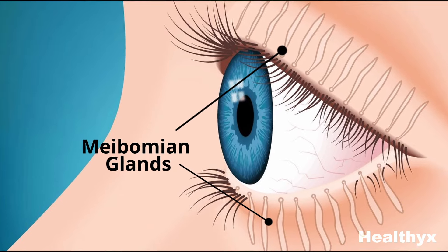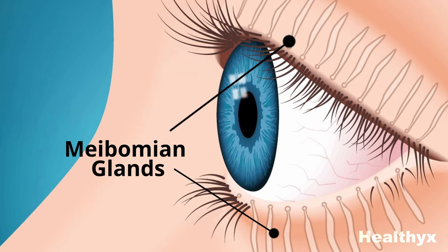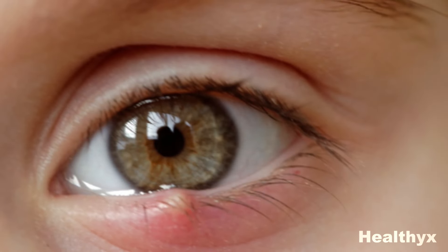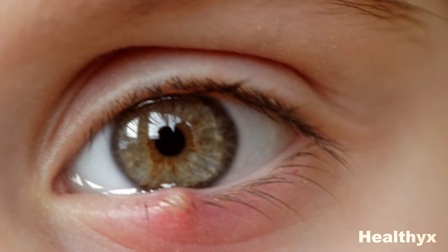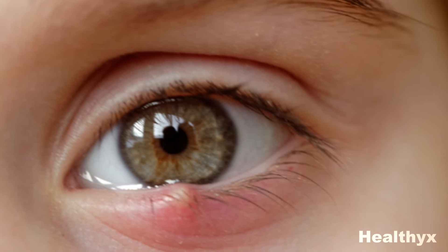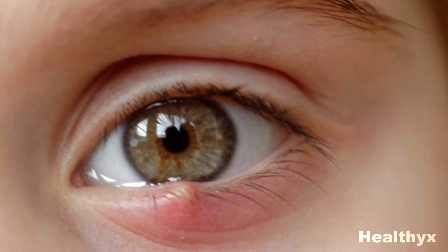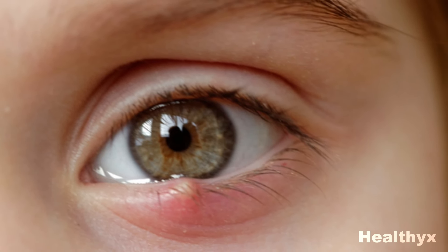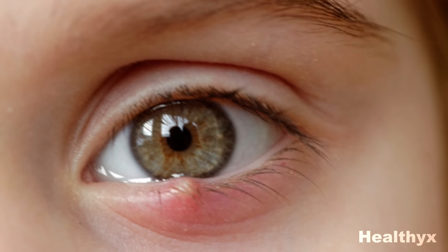A sty may develop on your eyelid in the meibomian gland duct. These irritations present as red lumps along the edge of the eyelid. While they can be annoying or painful, they are rarely serious.